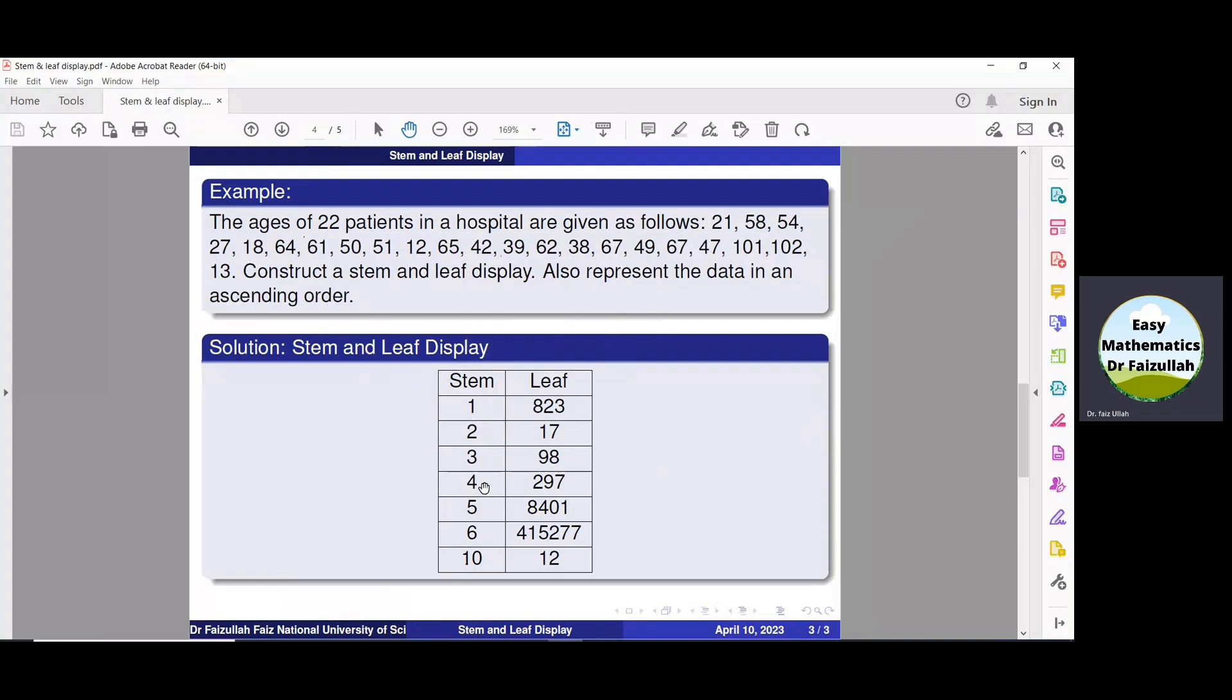Similarly, we can find leaf of 4, 5, 6 and let us see the leaf of 10. Then, the first one is 101, so 1 will go to the leaf. The next is 102, so 2 will go to the leaf.